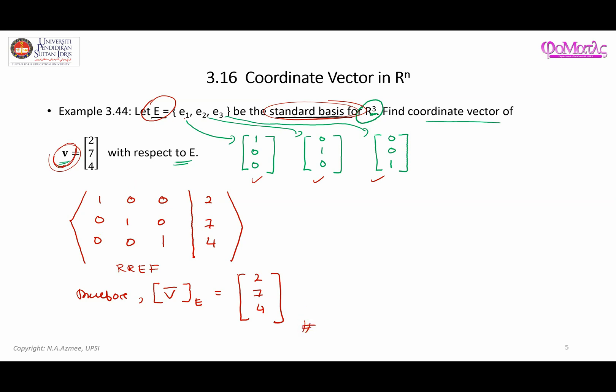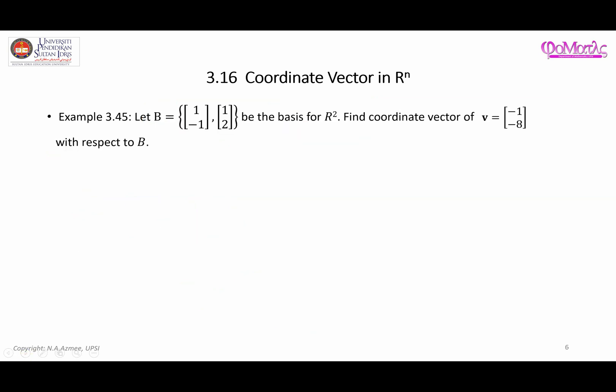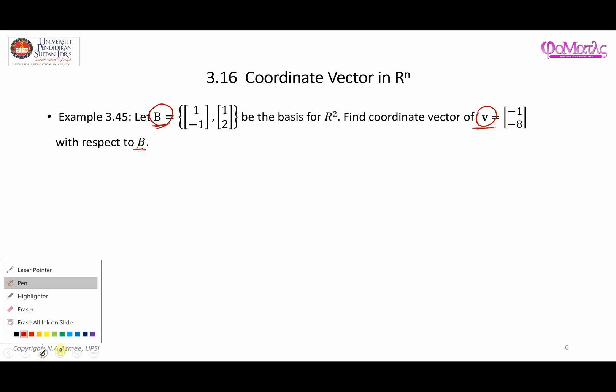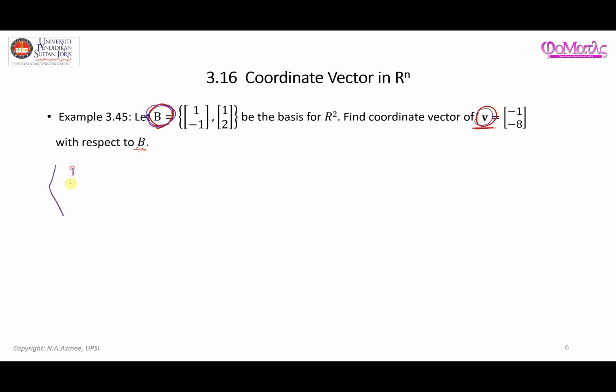Now let's look at another example. Here we have a basis defined — it is not a standard basis, so we'll have to do some elementary row operations to reduce the matrix to RREF. Here is the basis, and this is the vector in the subspace, and you are asked to find the coordinate vector of this vector with respect to B. The starting point is to combine the basis and the given vector together.